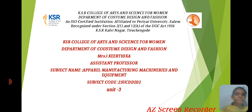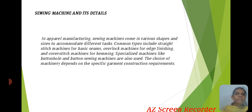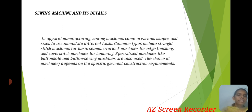Unit 3: Sewing Machine and its Details. In apparel manufacturing, sewing machines come in various shapes and sizes according to different tasks. Common types include straight stitch machines for basic seams, overlock machines for edge finishing, and cover stitch machines for hemming. Specialized machines like buttonhole and button sewing machines are also used. The choice of machinery depends on the specific garment construction requirement.